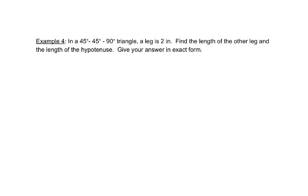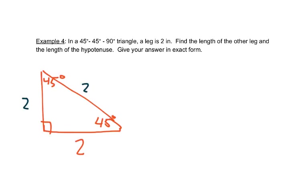So let's look at this here. It tells us we have a 45-45-90 triangle. And it tells us a leg is 2. And it wants us to find the length of the other leg and the hypotenuse. So this is given to us, but we know that the other leg is also 2, and the hypotenuse then would be 2 times the square root of 2.